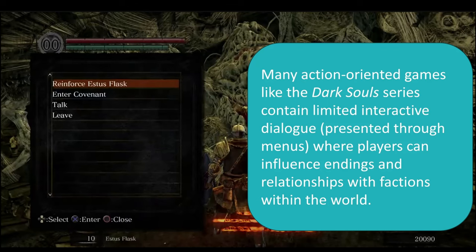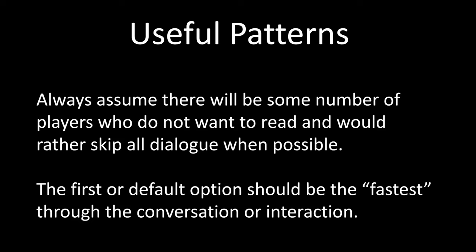As we're talking about interactive dialogue, there are a number of useful patterns to help beginners get used to writing interactive dialogue. The first is we can always assume there will be some number of players who do not want to read anything within the game. Generally if we're creating a more story or narrative heavy game, a large number of players will probably want to read every word, but there will be some part of the audience who doesn't want to do that. So crafting the first or the default option as the fastest way through the conversation or interaction is generally a good pattern. This allows somebody who wants to keep clicking or pressing buttons to progress through the conversation — you can think of this as the skip option for those who don't want to engage as much with the story.